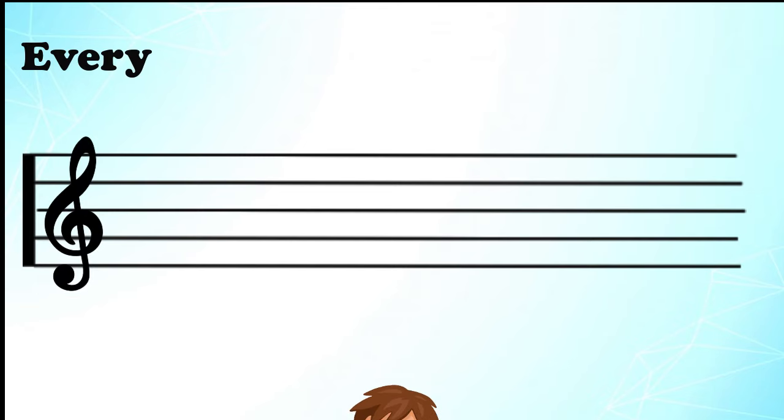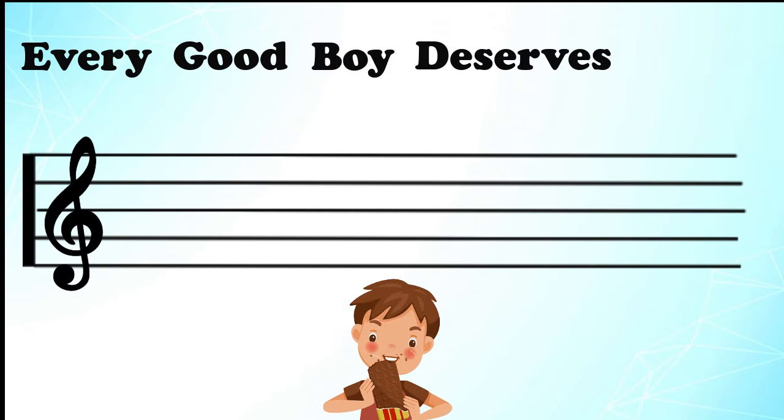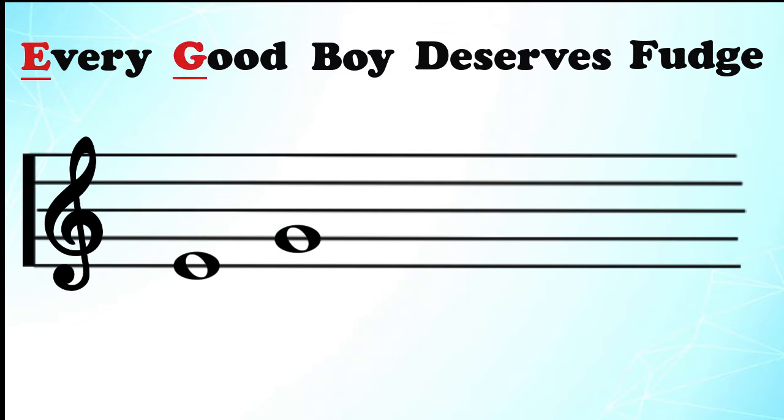If they're on a line, we used the saying every good boy deserves fudge to remind us that the notes from the first line up to the fifth line are E, G, B, D, and F.